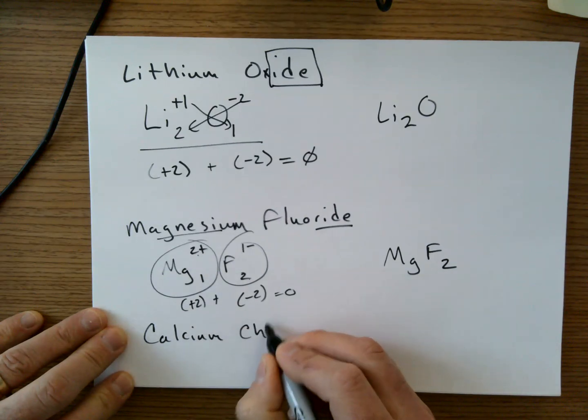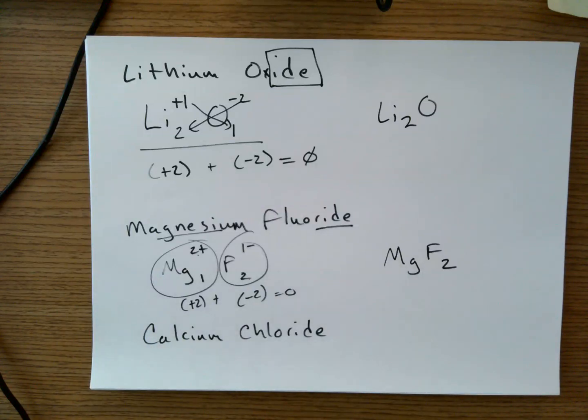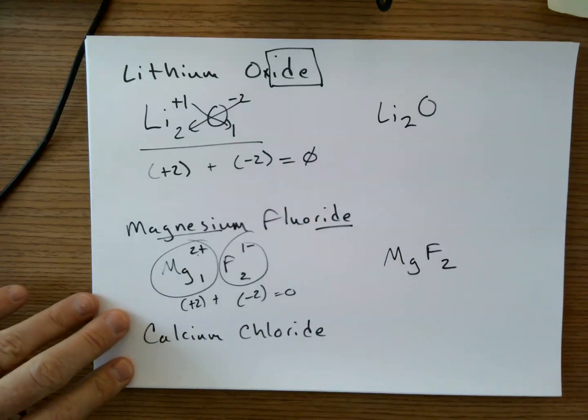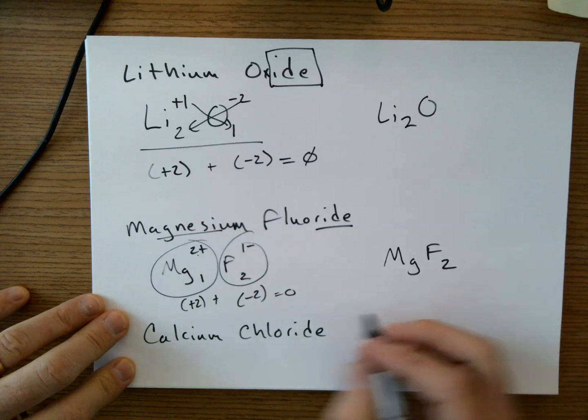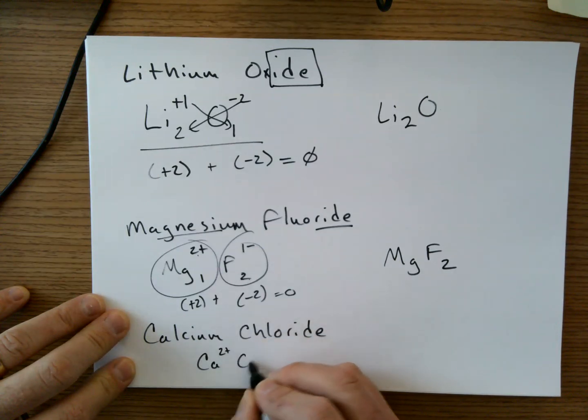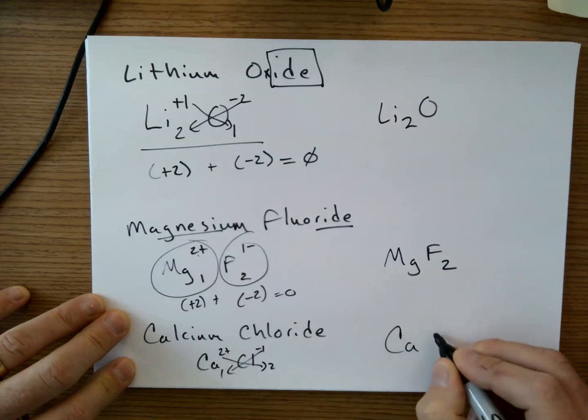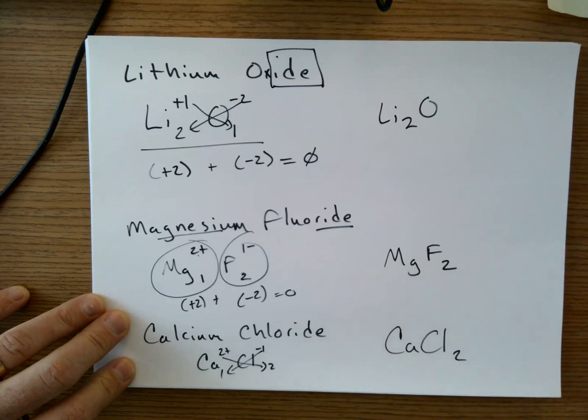Let you guys pause the video and try calcium chloride. Calcium is a positive two. Chlorine is a minus one. We're just going to crisscross and rewrite it as CaCl₂.